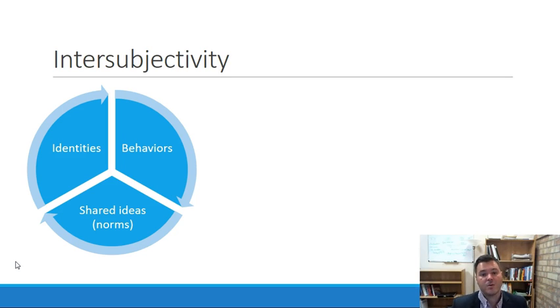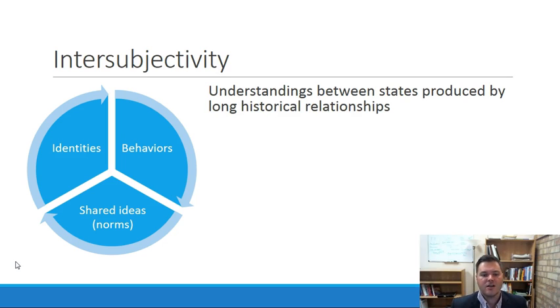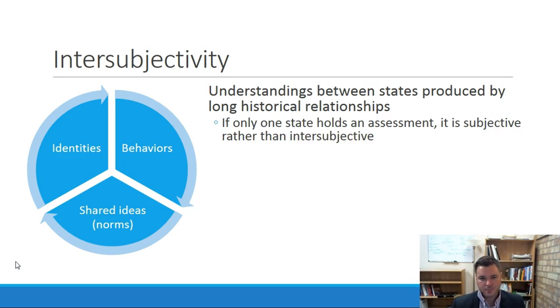Constructivist international relations theorists are going to be quite concerned with intersubjectivity between states. So it's not enough to just look at the United States and China in terms of their hard power to predict will they get along what will they do. Constructivist theorists are going to say you need to look at their long history of relationships. How do the Chinese and the Americans see one another? How do they view their relationship and they're going to say that comes from their long history of interactions with one another. And so intersubjectivity requires